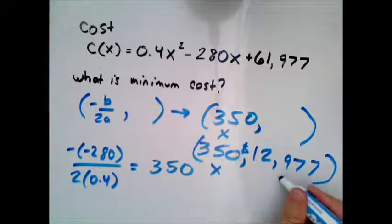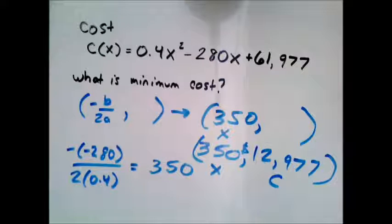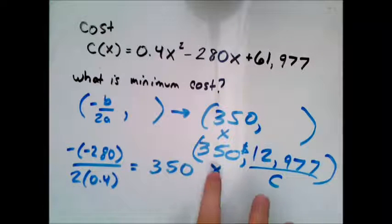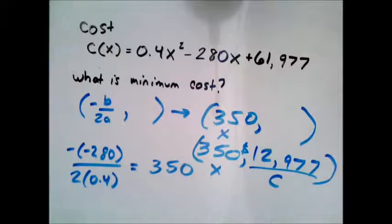So this is x and this is the cost, c of x. So when they want the minimum cost, it's $12,977. This is the amount of units that give me the minimum. So this is where the minimum is at and this is what the minimum actually is.